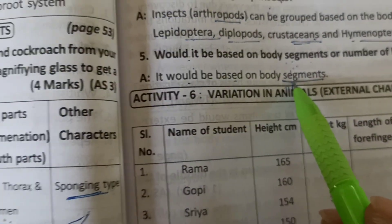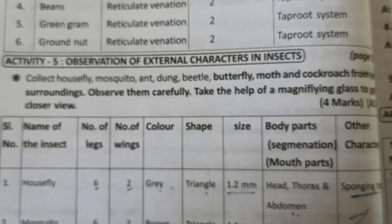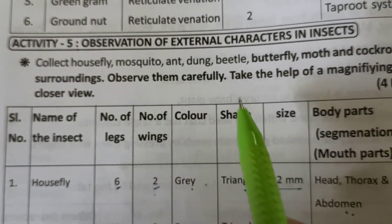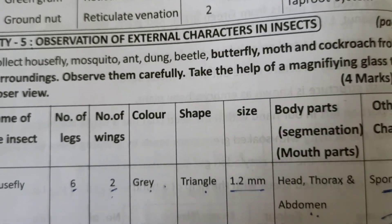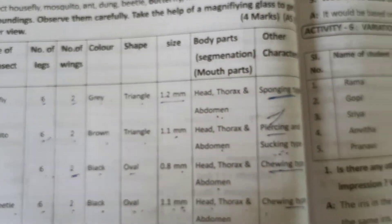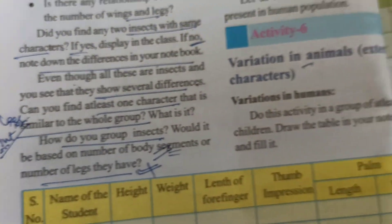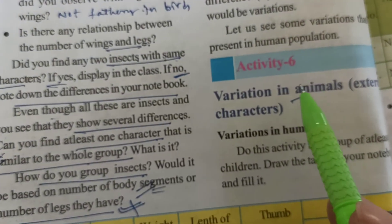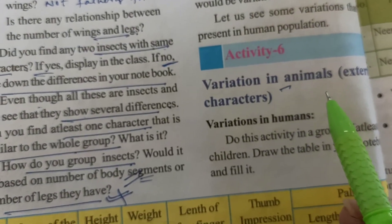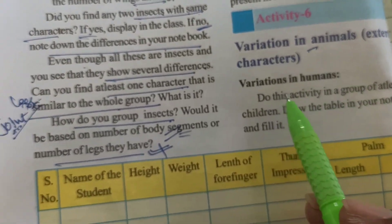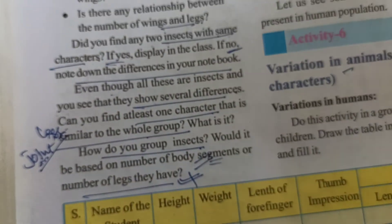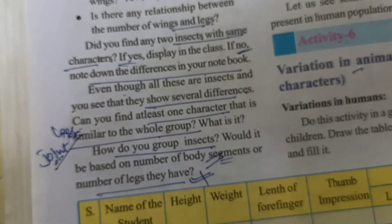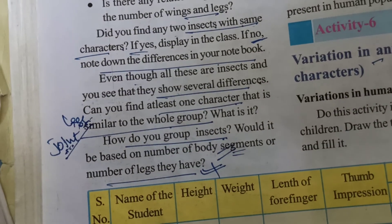Till now we discussed Activity 5: observation of external characters of insects. Next, we will continue with Activity 6 in the textbook — variations in animals based on external characters. We will discuss that in the next video. Thank you, children.